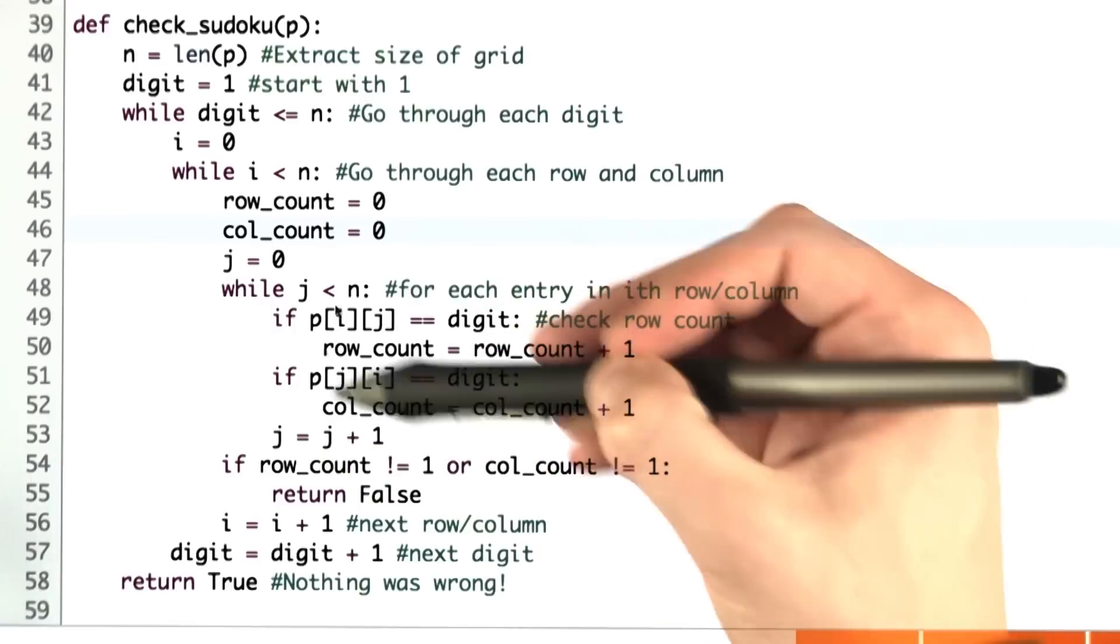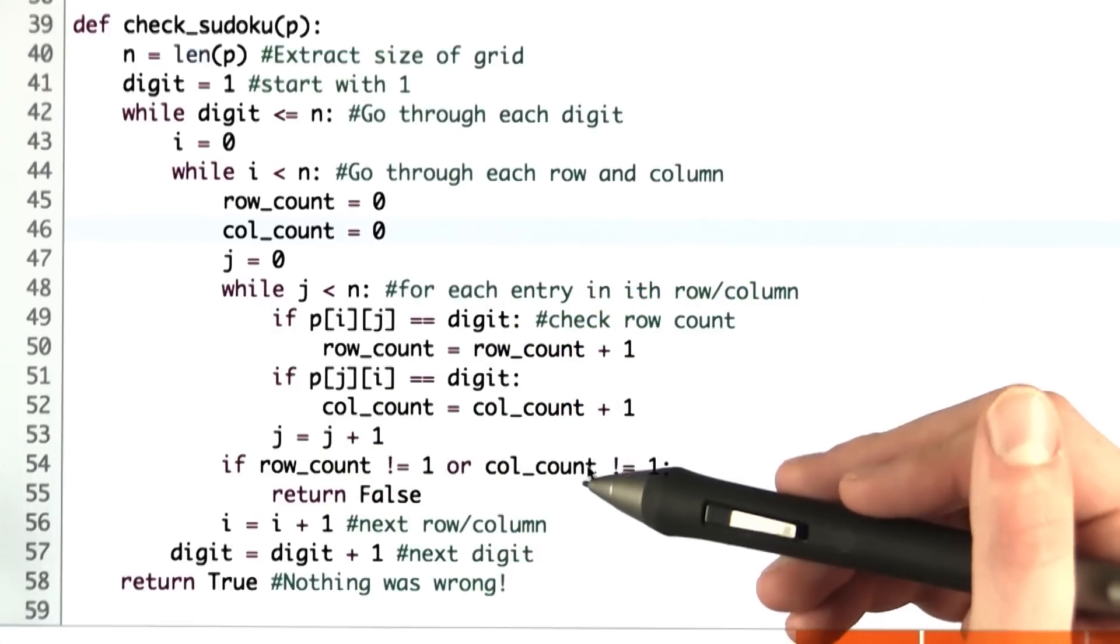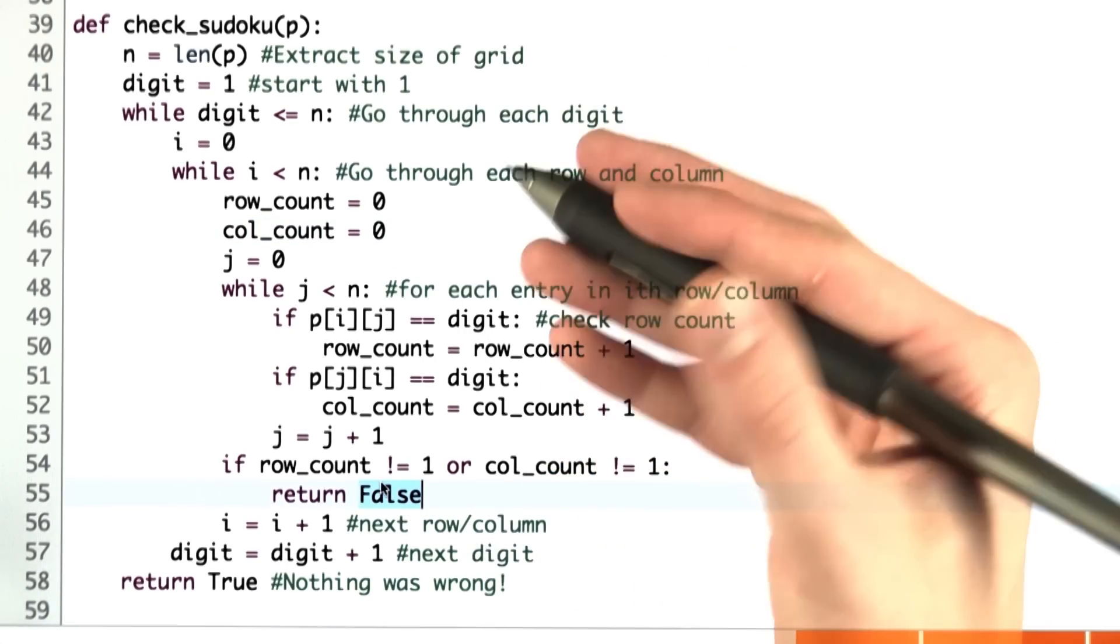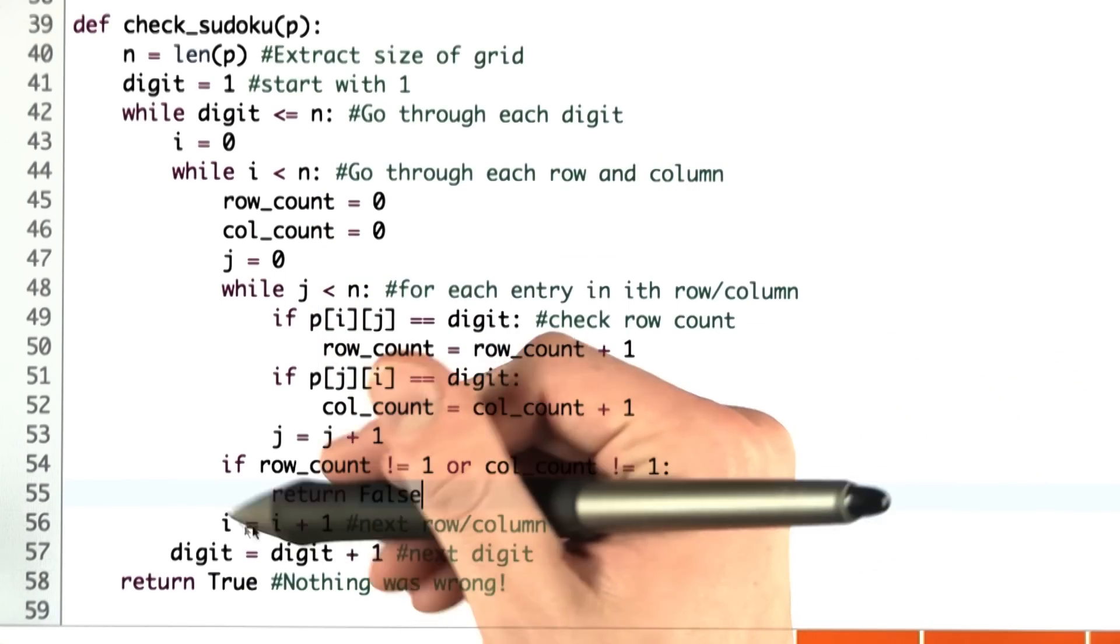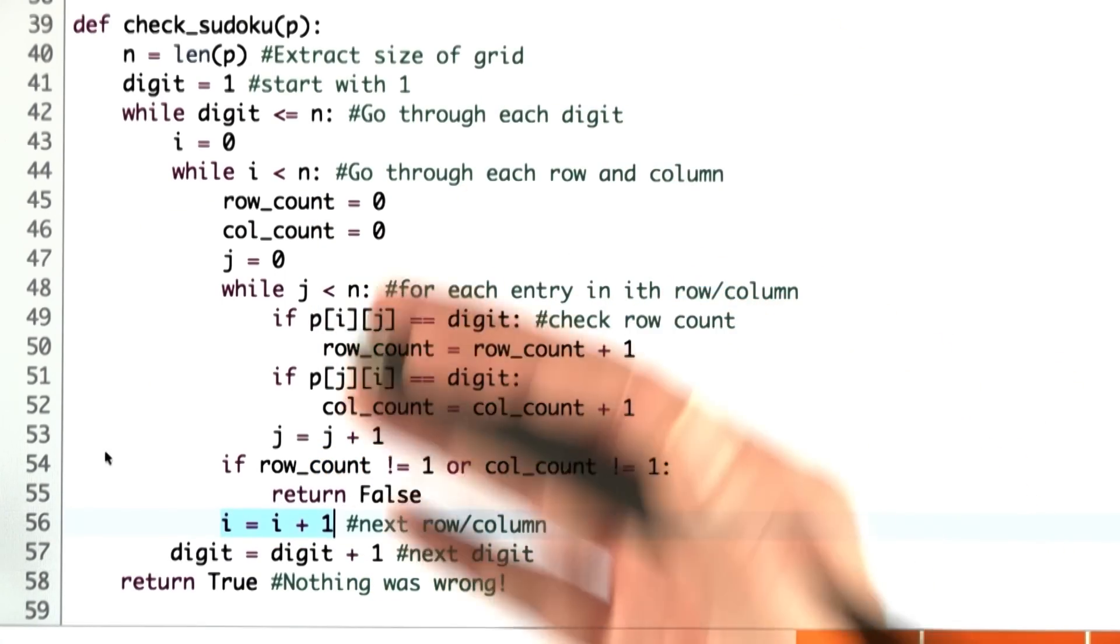Once we go through that row and column, we ensure that the row count and column count both are exactly 1. If they aren't, then we return false and stop because the grid has already violated our Sudoku property. Otherwise, we keep going to the next row and column until we've gone through each row and column for that digit.